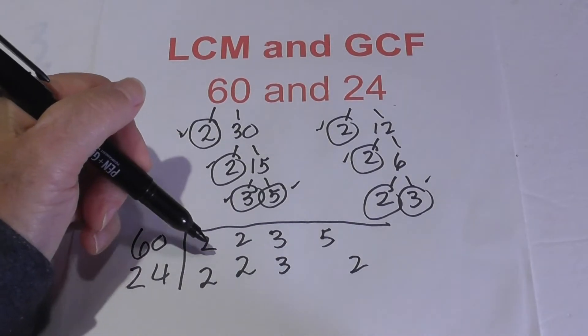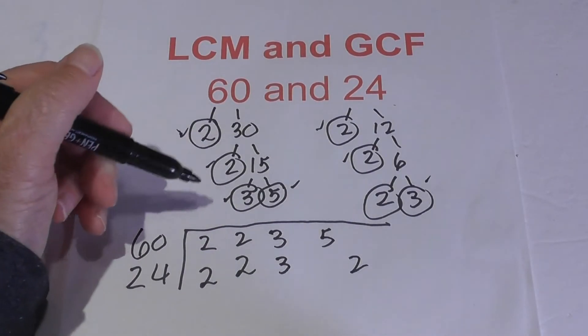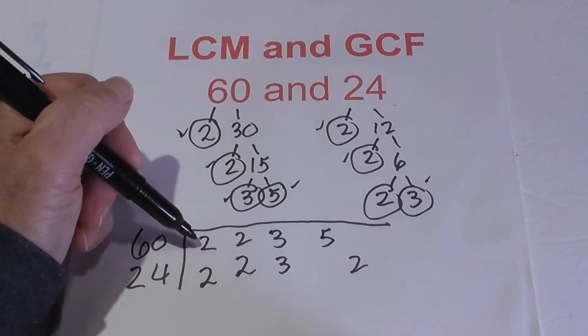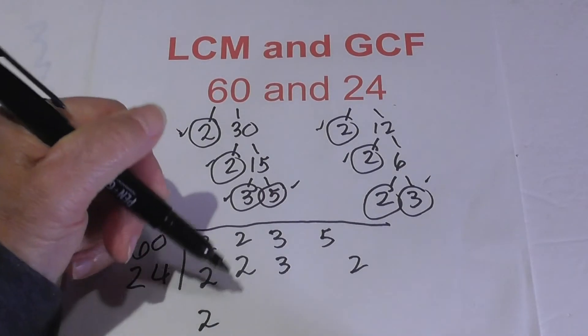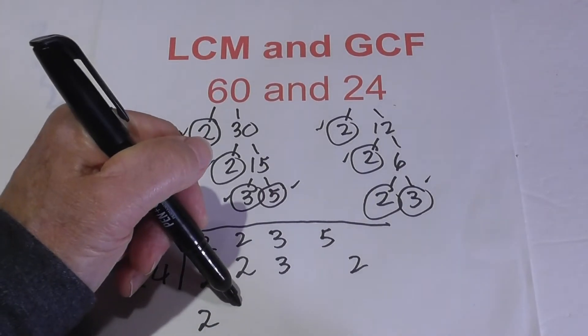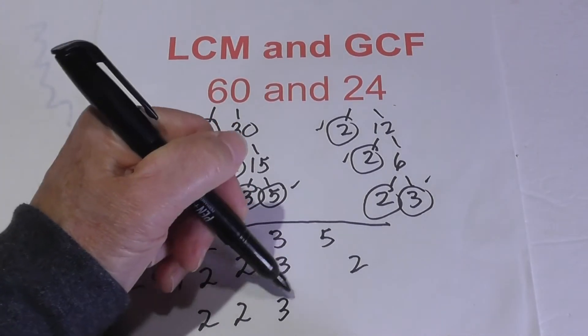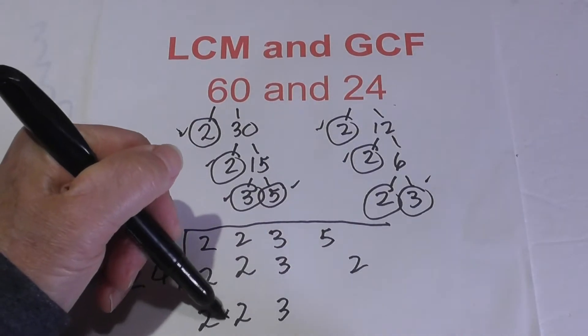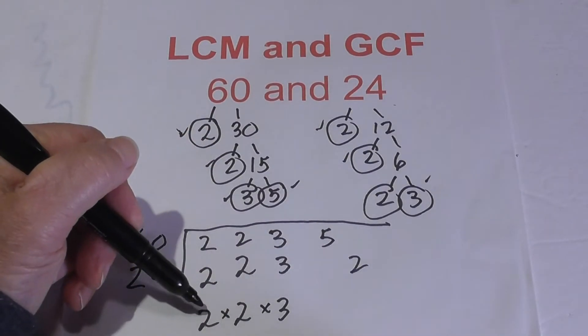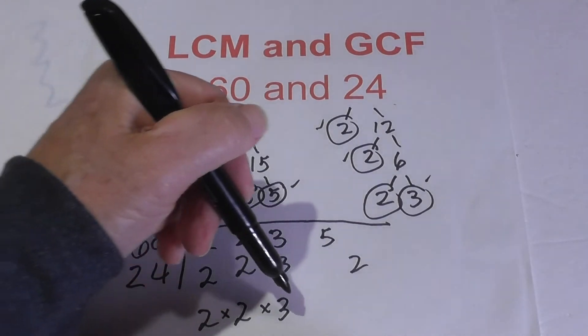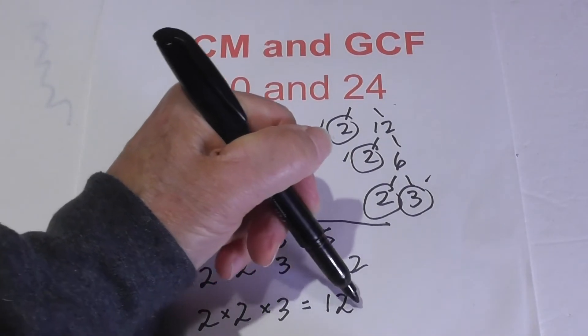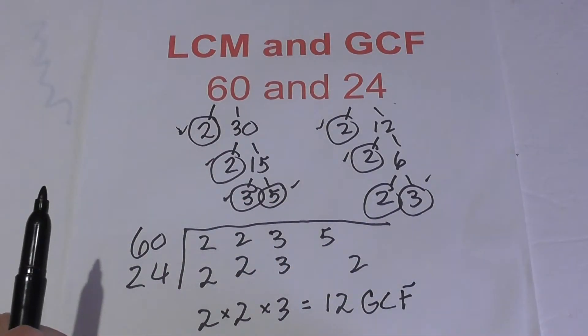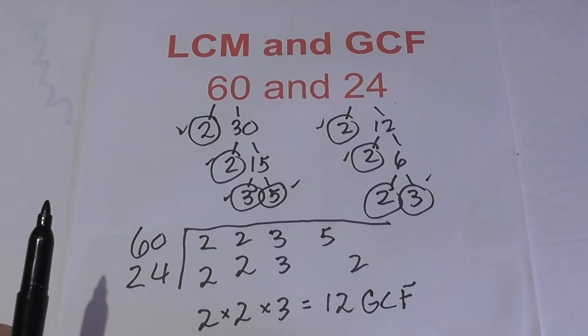For the greatest common factor, since you have two numbers, you need to find pairs and bring one down. We have a pair here, so I'll write a 2. We have a pair here—write the 2. We have a pair here. We do not have a pair at the 5 nor the other 2. Now multiply these together: 2 times 2 is 4, 4 times 3 is 12. So the greatest common factor is 12.